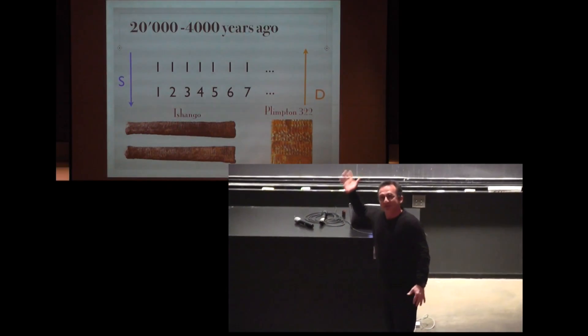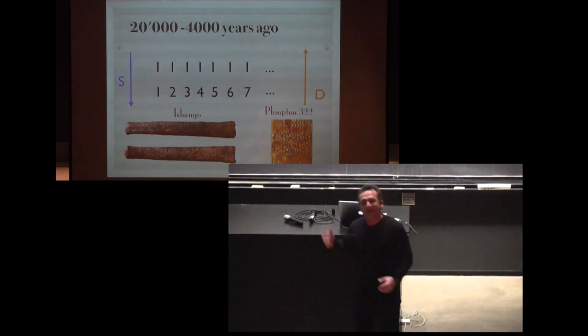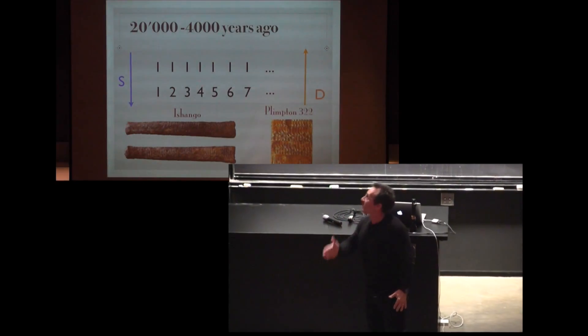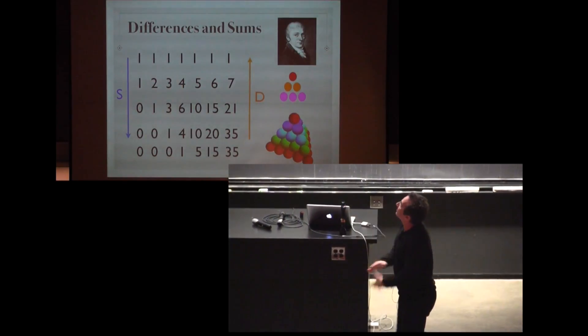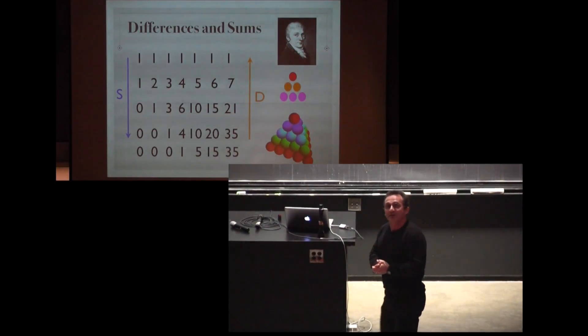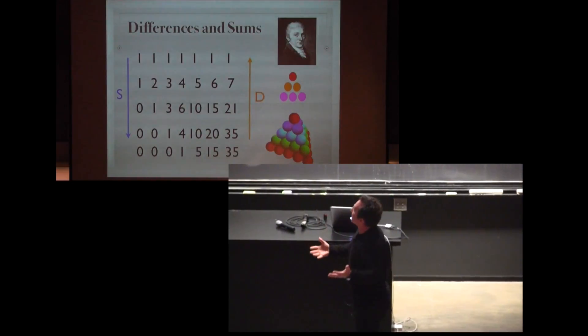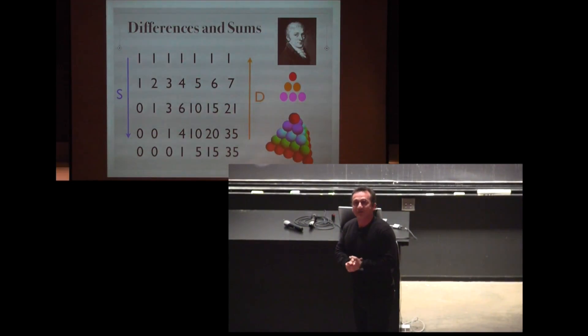Introducing the number is a summation process, like 4 is 1 plus 1 plus 1 plus 1. And we can go backwards by taking differences, 4 minus 3 is 1. And we can continue that and we can add up the numbers and we get triangular numbers.